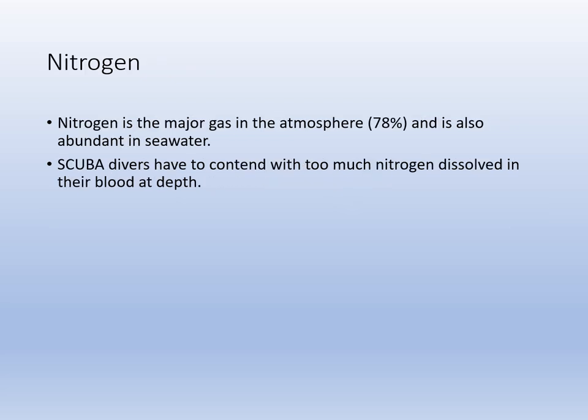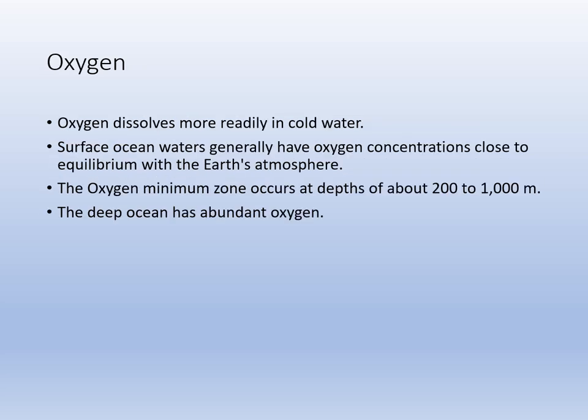Nitrogen is the major dissolved gas because nitrogen is the major gas in the atmosphere. Scuba divers who get too much nitrogen in their blood at depth experience nitrogen narcosis — they can feel high and get vertigo. Oxygen, which we need for respiration, dissolves more readily in cold water. That's why productivity near the poles is greater than near the equator. There is also an oxygen minimum zone from about 200 to 1,000 meters depth where there's less life. The surface gets oxygen from photosynthesis, but that intermediate layer is oxygen depleted.